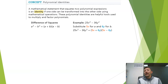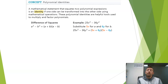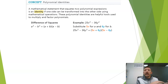A difference of squares is when we have a squared minus b squared — that can always be factored to a plus b times a minus b. For example, 25x squared minus 36y squared: is there something we could square to get 25x squared? Yes — if we square 5x, we get 25x squared. If we square 6y, we get 36y squared. So 25x squared minus 36y squared factors to 5x plus 6y times 5x minus 6y.